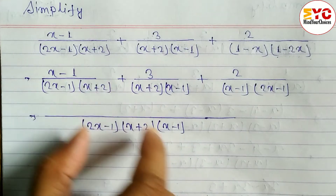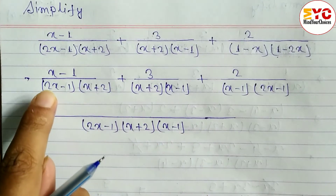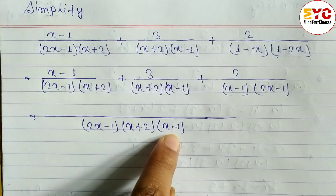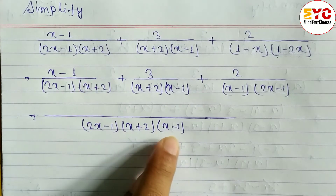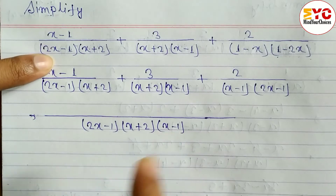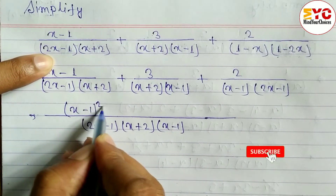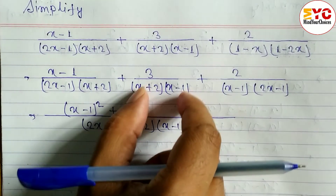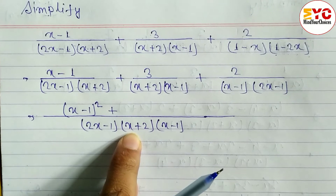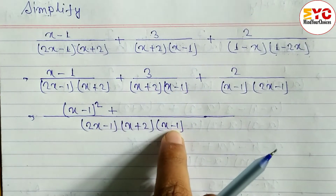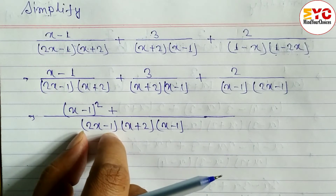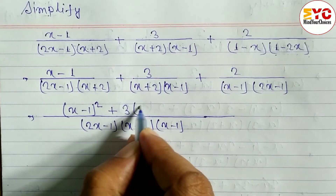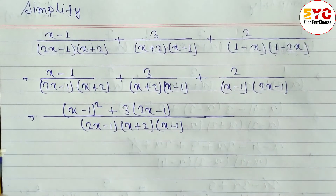Dividing the denominator for the first term: 2x minus 1 cancels, x plus 2 cancels — remaining is x minus 1. We multiply (x minus 1) by the numerator, getting (x minus 1) squared. It is plus, so we write plus. For the second term: x plus 2 cancels, x minus 1 cancels — remaining is 2x minus 1. Multiply by 3, giving 3(2x minus 1), plus.